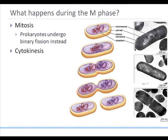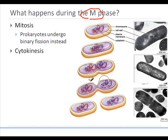A series of stages will happen during M phase, also called metaphase. Prokaryotes undergo binary fission instead — a process in which the cell pinches off from both sides, like squeezing a balloon. Binary means two, and fission means to separate. However, regular eukaryotic cells undergo mitosis and then cytokinesis, which is division of the cytoplasm.